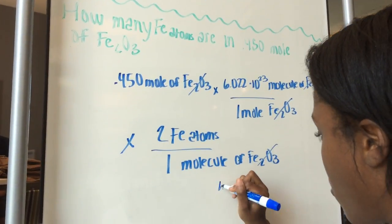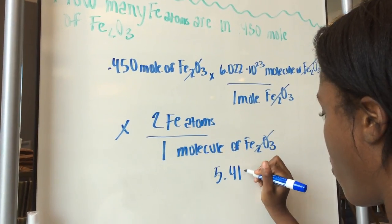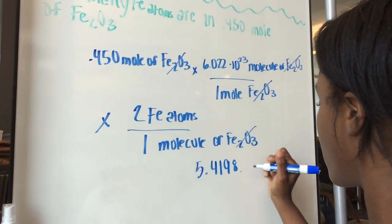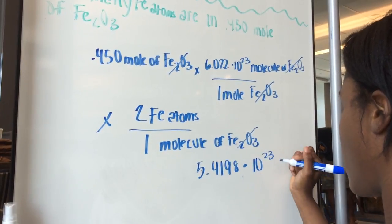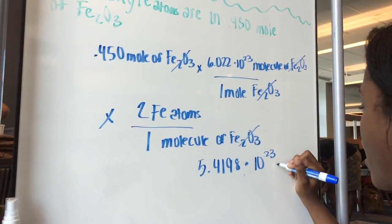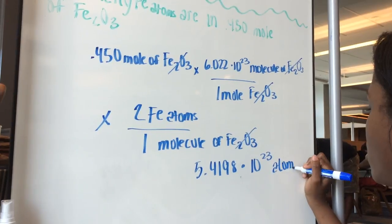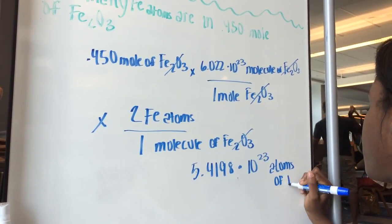Once we multiply everything together, we get 5.4198 times 10 to the 23rd atoms of Fe.